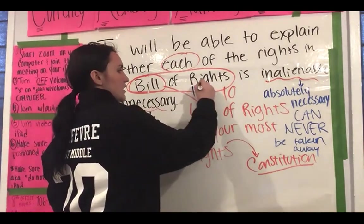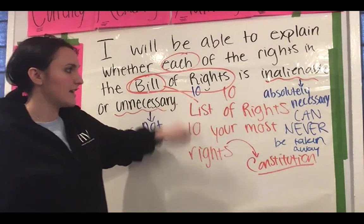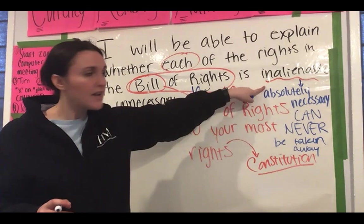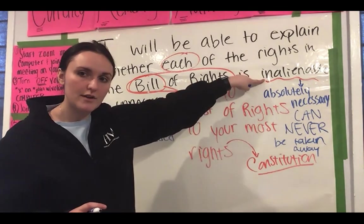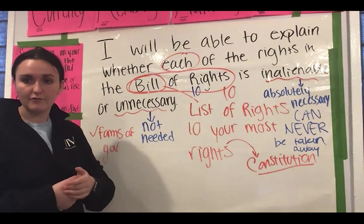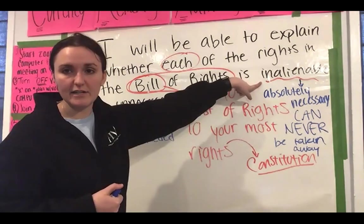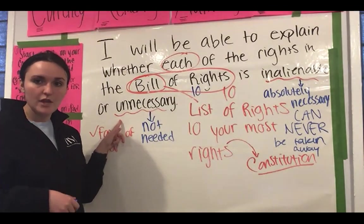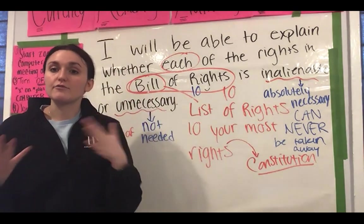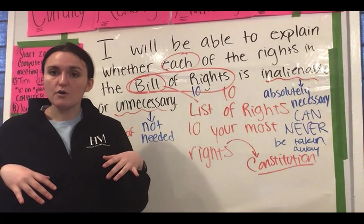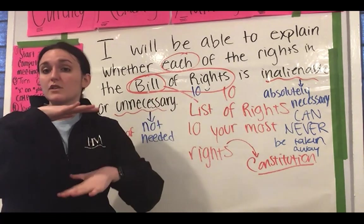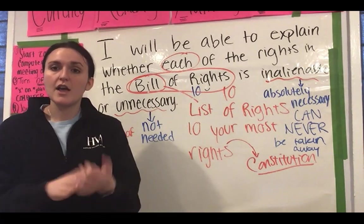There are ten rights in the Bill of Rights. Your job is to figure out whether each right is inalienable — absolutely necessary, something we should never take away no matter the situation — or whether it's unnecessary, not really needed. You're going to figure out the different rights in the Bill of Rights as well as whether each right is inalienable or unnecessary through an activity today. Before we jump into the activity, I've got a quick video to show you that gives you a visual of the different rights. You do not need to take notes — all the notes you need come on a handout you'll glue into your interactive notebook.